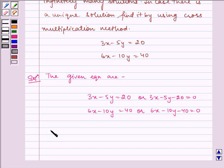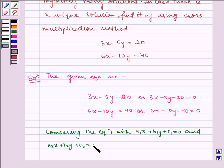Now, comparing the equations with a1x plus b1y plus c1 equals 0 and a2x plus b2y plus c2 equals 0,